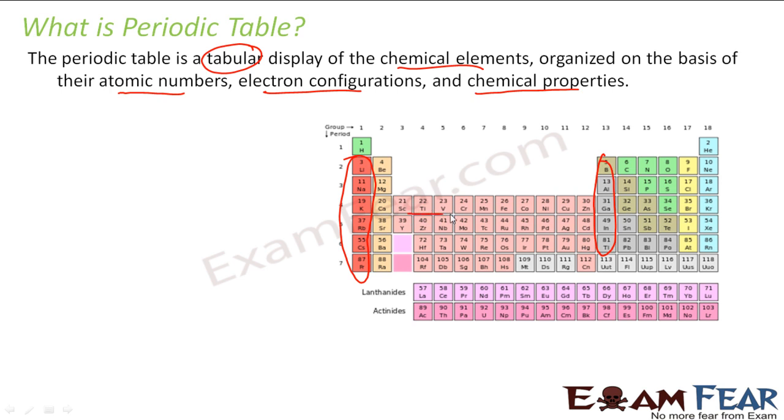These elements have similar electronic configurations and the atomic number keeps increasing as you move across. The goal is that we have so many elements - you have to arrange the chemical elements in some order so that it is easy to pick one element and tell what its property is.